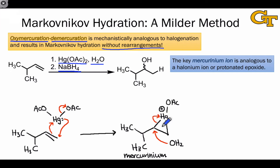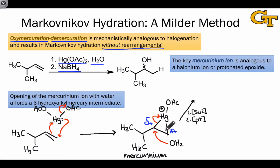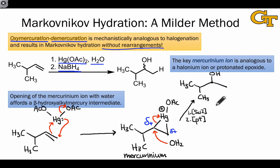The deep reason for this selectivity has to do with the extent of partial positive charge on the two carbons of the mercurinium ion. Partial positive charge is much greater on the more substituted position than on the less substituted position. This SN2 ring opening followed by proton transfer from the oxygen that becomes positively charged produces an intermediate containing a new hydroxyl group at the Markovnikov or more substituted position, but still containing a bond between carbon and mercury.